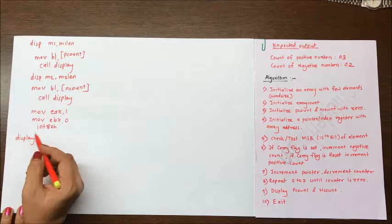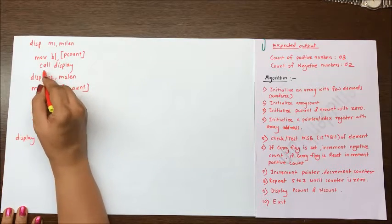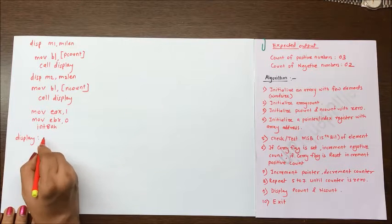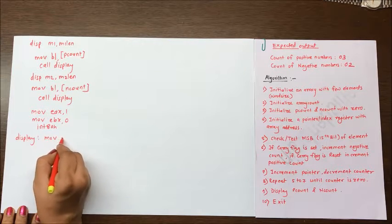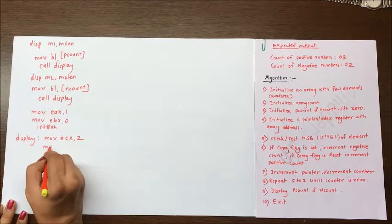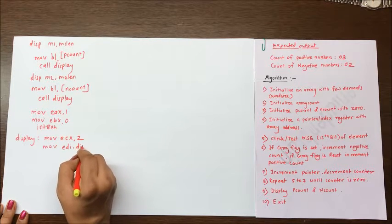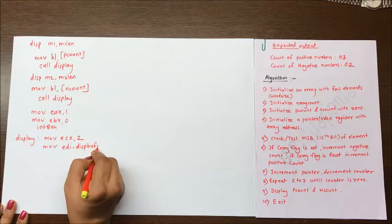Although it is written after exit, it is called where the call instruction and its name is. We are writing a display procedure here. Now this display procedure is for two digits, so ECX should be 2. Move edi, disbuff. So disbuff address is initialized to edi.